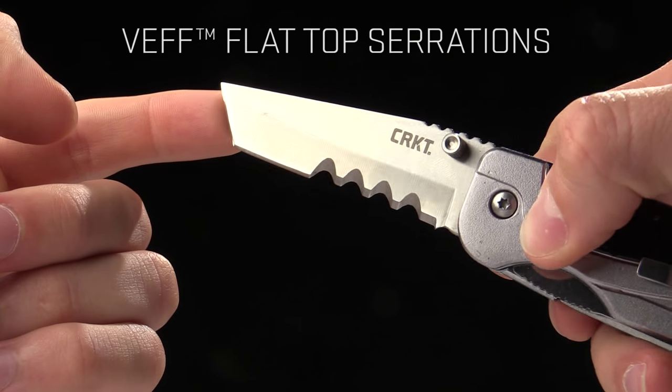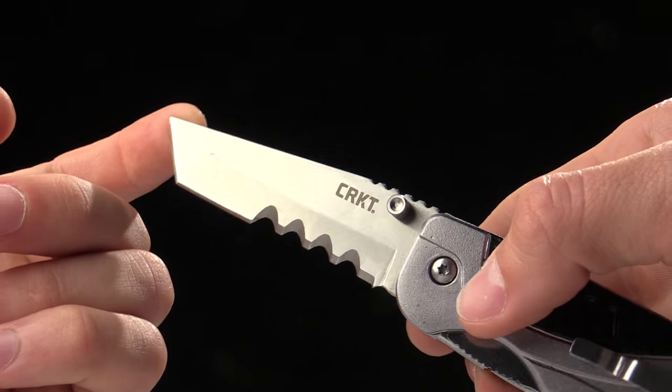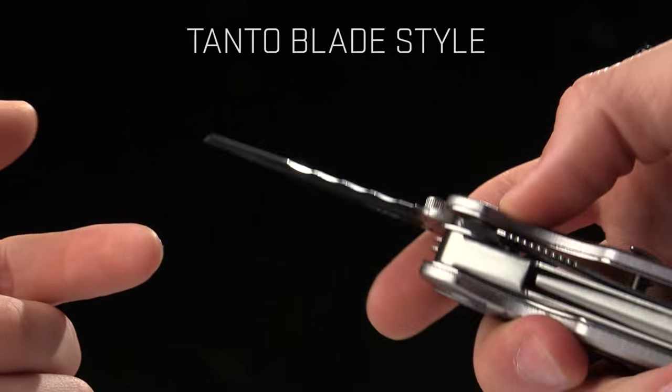It's got VEF flat top serrations there. Those are going to work good for cutting fibrous materials, rope, webbing, that sort of thing. You've got a tanto tip on there, which is going to work great for detail work.